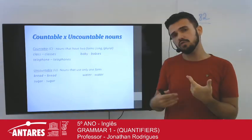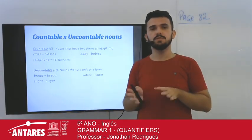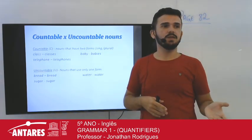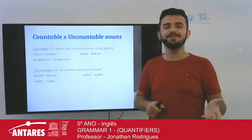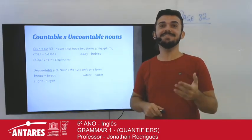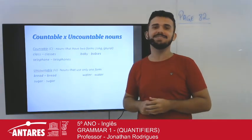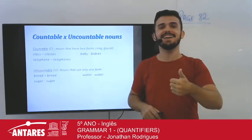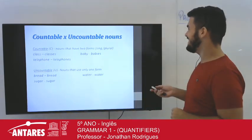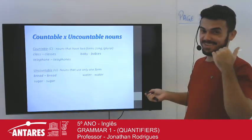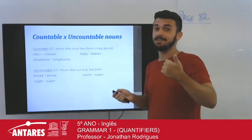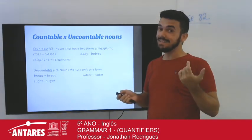Sugar — é o açúcar. Eu conto açúcar? Não. Então sugar é uncountable — 'U'. About countable and uncountable: countable has two forms, uncountable has one form. Is it clear? This example shows us 'few'. Nowadays, there are few people on the streets — há poucas pessoas nas ruas — because of the pandemic. This pandemic makes us stay home.